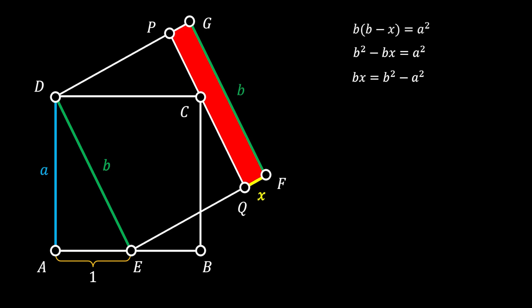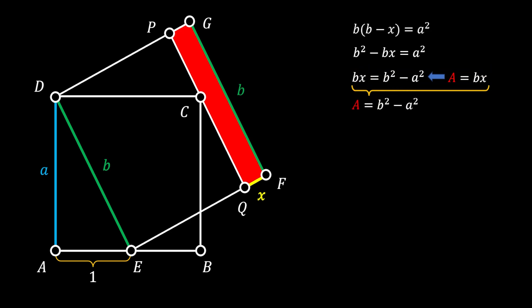The side FG of our red rectangle equals the side of our bigger square with length b. So the area of the rectangle equals the product of its sides, b times x. Substituting our equation, the area of the red rectangle equals b squared minus a squared.